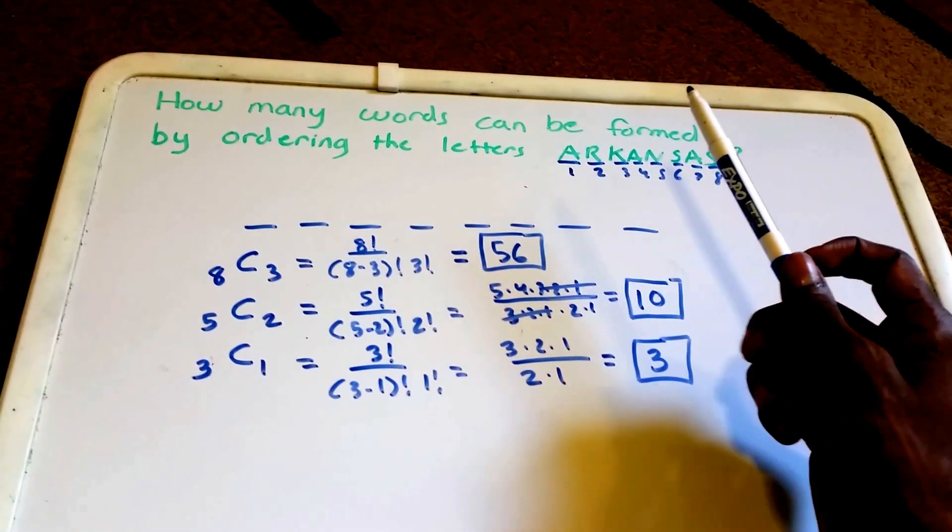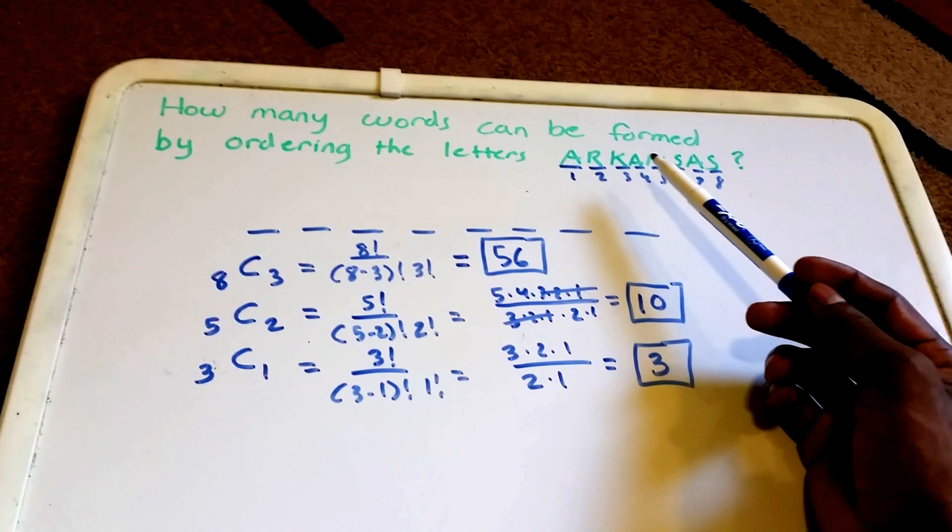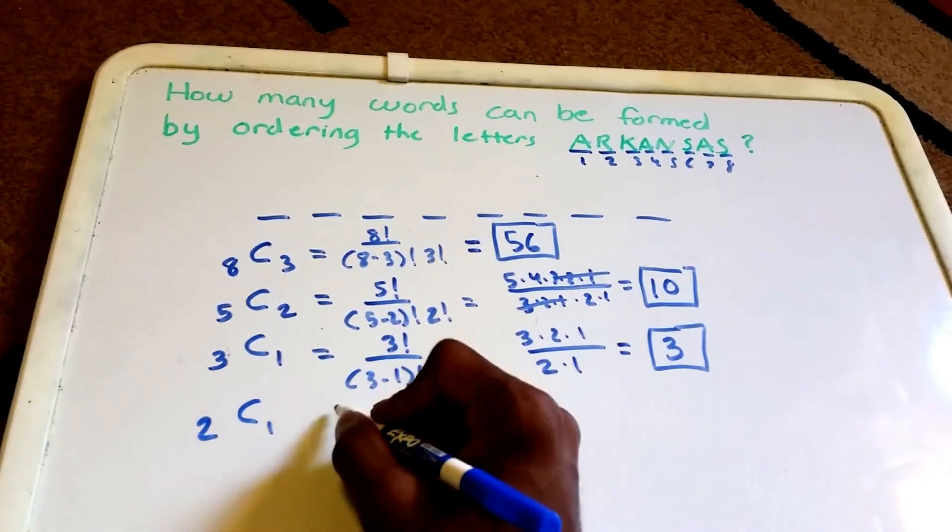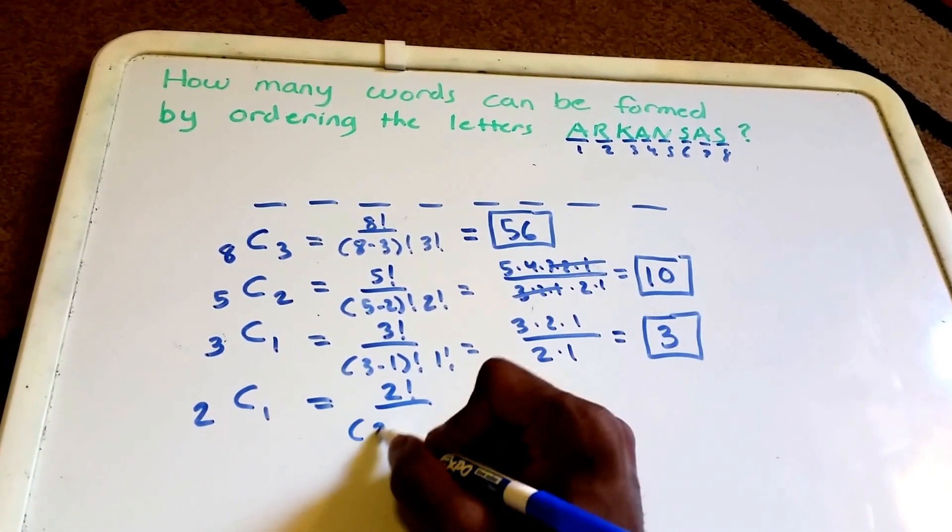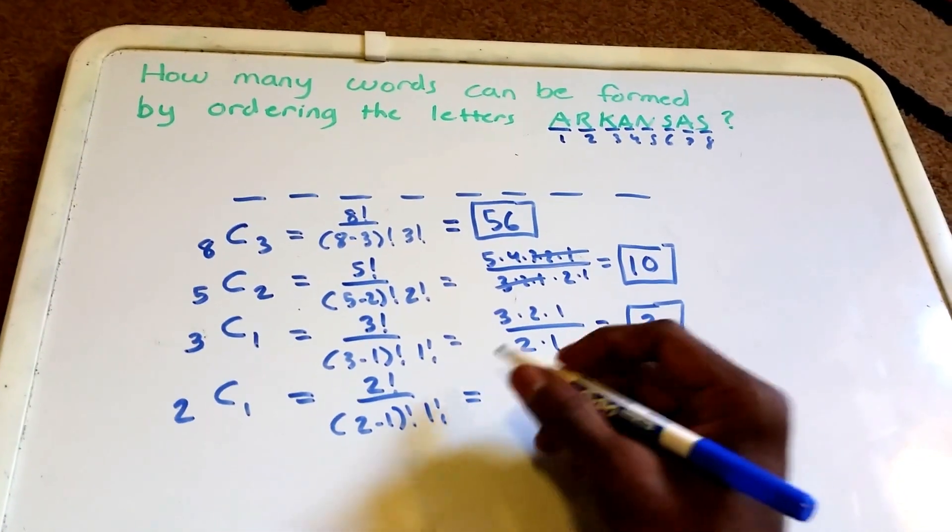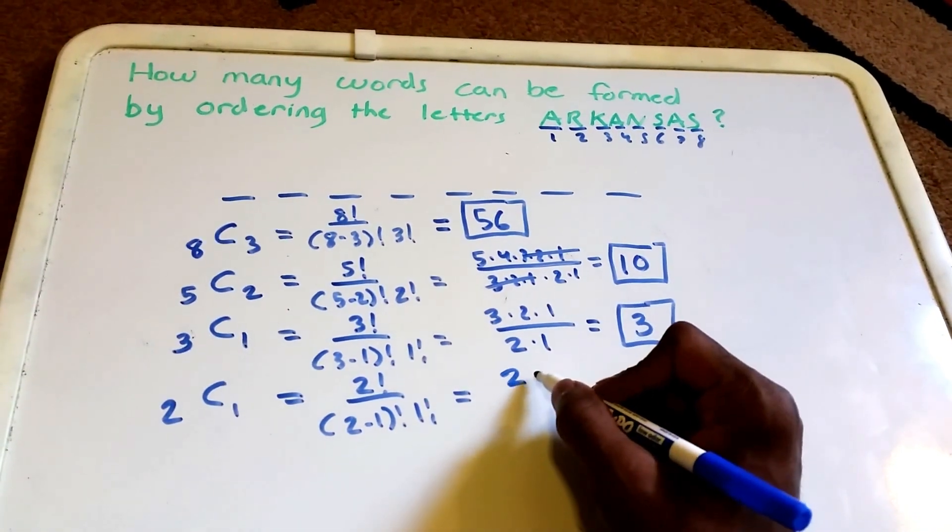Next, let's place the K in any one of the remaining two positions. We have two positions, we want to choose one, and we get 2 factorial over 2 minus 1 factorial times 1 factorial, and this is equal to 2 times 1 over 1 factorial, which is equal to 2.